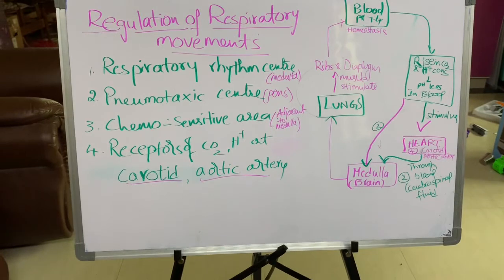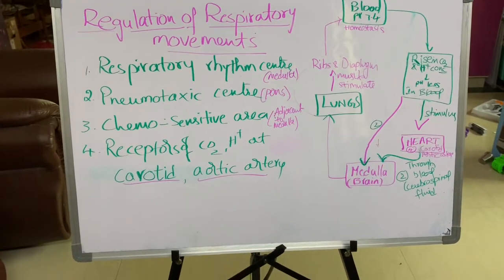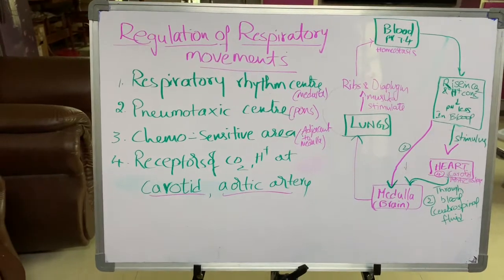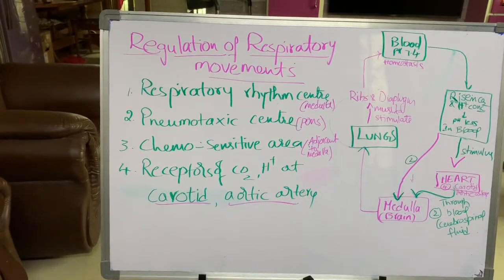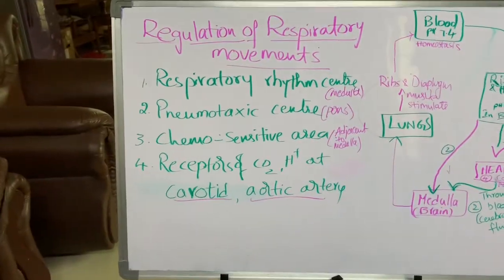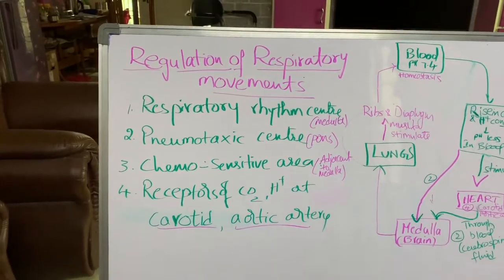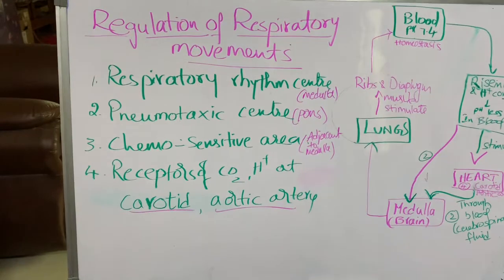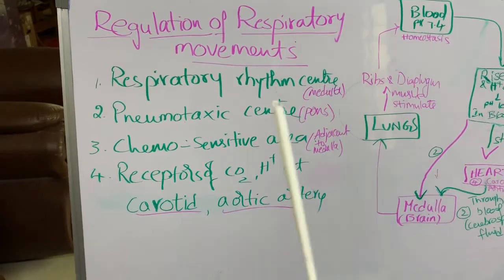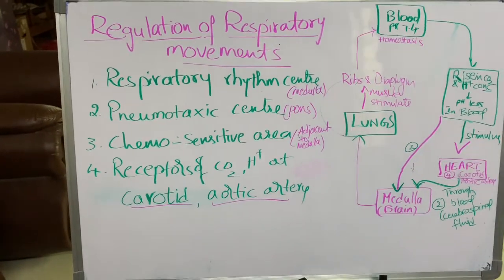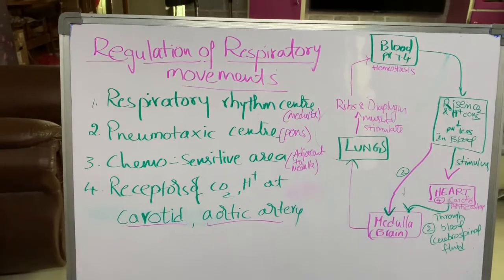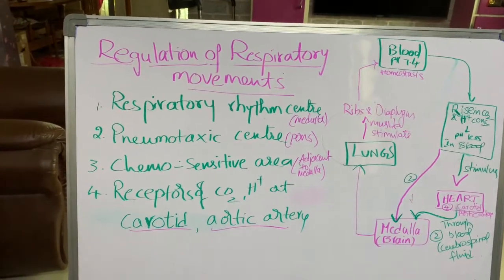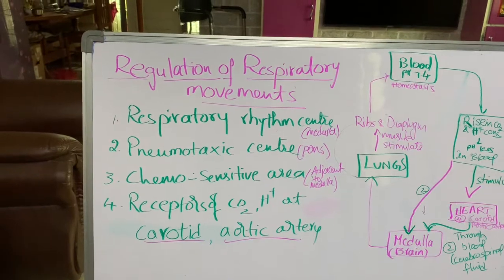Today we are going to learn about the regulation of respiratory movements. We have the capability to moderate and maintain the respiratory rhythm according to the demands of the tissues. This is done by the neural system. The primary regulatory center is the respiratory rhythm center in the brain, which controls respiratory movement, either increasing or slowing the respiratory rate.